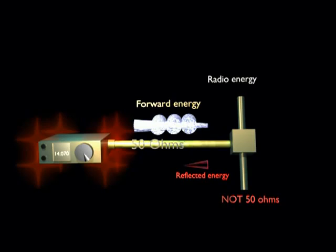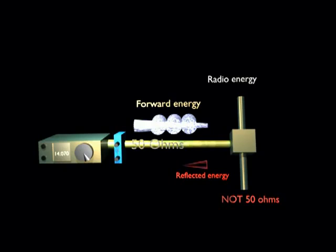So what is the solution? One method commonly used is to insert an antenna tuner after the transmitter. This tuner will intercept the reflected wave, adjust its phase so that it combines with the forward wave and send it back to the antenna. The transmitter will see its preferred 50 ohm load and will deliver maximum output to the input of the antenna tuner.